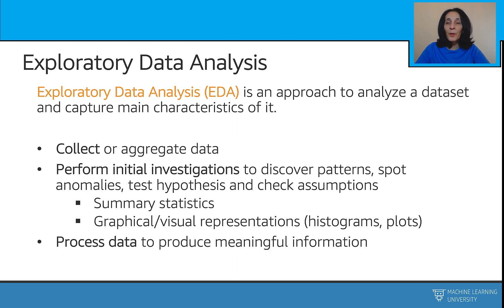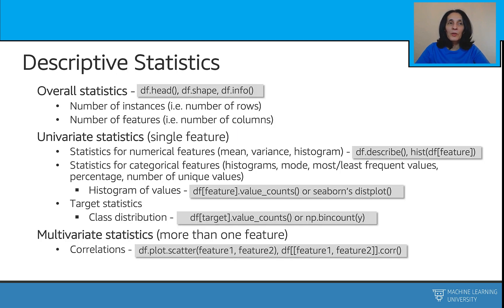You can also preprocess your data to produce more meaningful information from the raw data. With descriptive statistics, you can figure out how many instances there are — how many data samples you have, which is the number of rows. You can look at the number of columns of your tabular data and figure out how many features you have to build your model upon.